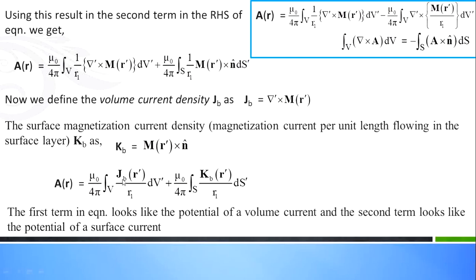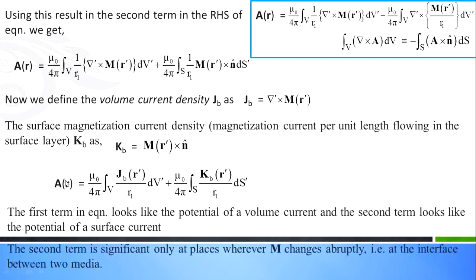So finally A of r equals mu zero over 4 pi, volume integral of Jb of r dash dv dash divided by r1, plus mu zero over 4 pi, surface integral of Kb of r dash divided by r1 into ds dash. The first term looks like the potential due to a volume current and the second term looks like the potential due to a surface current. The second term is significant only at the interface between two media where M changes rapidly. In conclusion, when a material is magnetized by an external field, some current is produced inside the material, and the total potential is the sum of volume current and surface current contributions. Thank you.